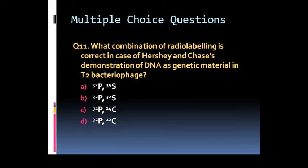Option C: Both DNA and protein contains sulfur and not sulfur. Option D: Both DNA and protein contains sulfur and not phosphorus. Question 11: What combination of radio labeling is correct in case of Hershey and Chase demonstration of DNA as genetic material in T2 bacteriophage?